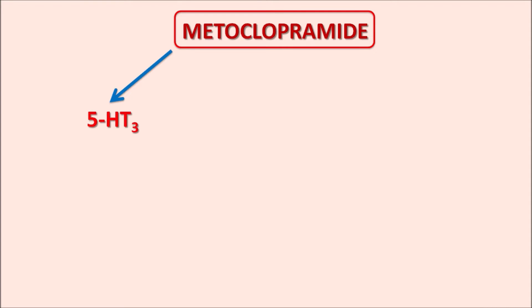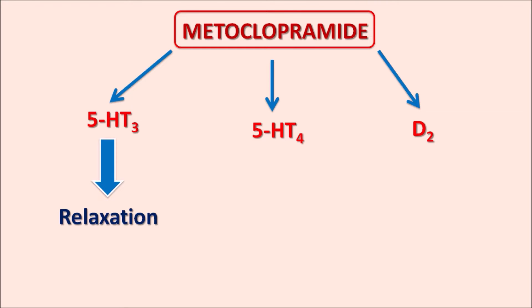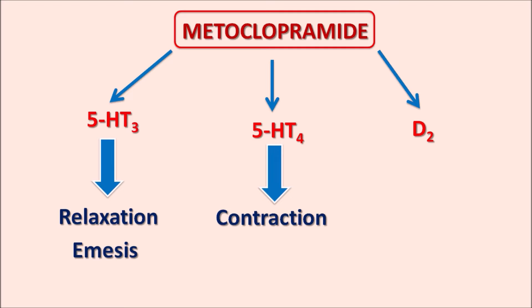Metoclopramide mainly acts on three important receptors: the 5-HT3 receptor, the 5-HT4 receptor, and the D2 receptors. The 5-HT3 receptors are responsible for gastrointestinal relaxation, decreasing motility, and within the CNS at the area postrema in the CTZ they are responsible for induction of emesis. The 5-HT4 receptors are present at enteric neurons and promote increased contraction and GI motility. Dopamine D2 receptors are present as presynaptic receptors at enteric neurons and are responsible for inhibition of acetylcholine release.